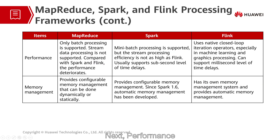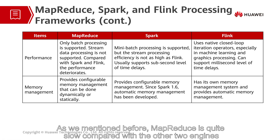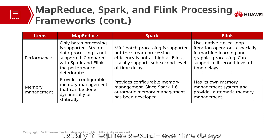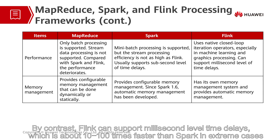Next, performance. As we mentioned before, MapReduce is quite slow compared with the other two engines. As for Spark, the stream processing efficiency is not as high as Flink. For Spark, usually it requires second-level time delays. By contrast, Flink can support millisecond-level time delays, which is about 10 to 100 times faster than Spark in extreme cases.